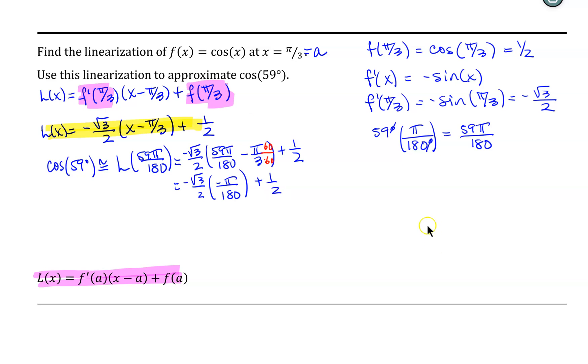Simplifying, multiplying this first term out, we end up with positive √3 times π. 2 times 180 is 360, plus 1/2.